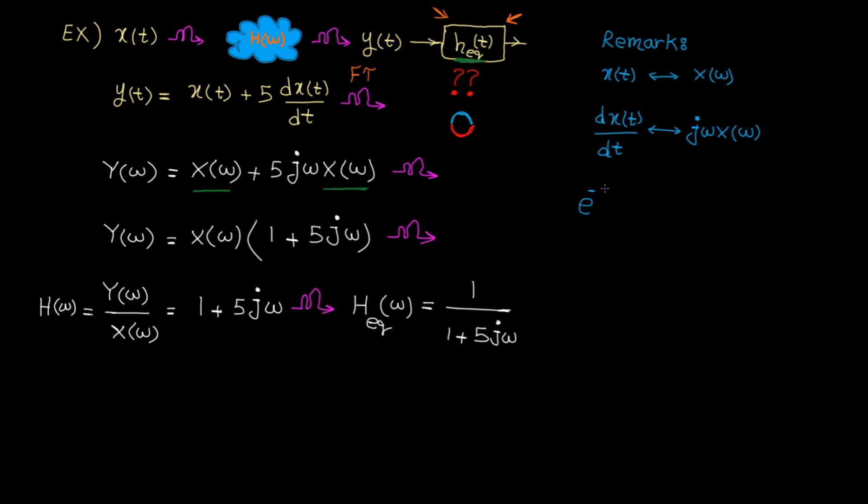From table of pairs, we know the Fourier transform of this guy is 1 divided by jω plus a. To use this pair, let's bring this 5 out. Here's what we get. I'm not doing any magic, these two terms are equal. If you bring 5 inside the parentheses, you will get the exact same thing.